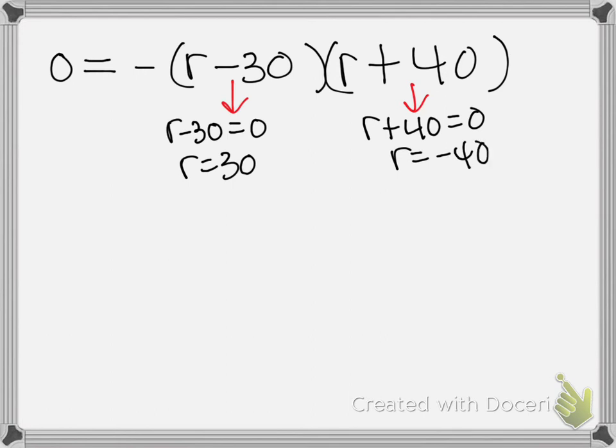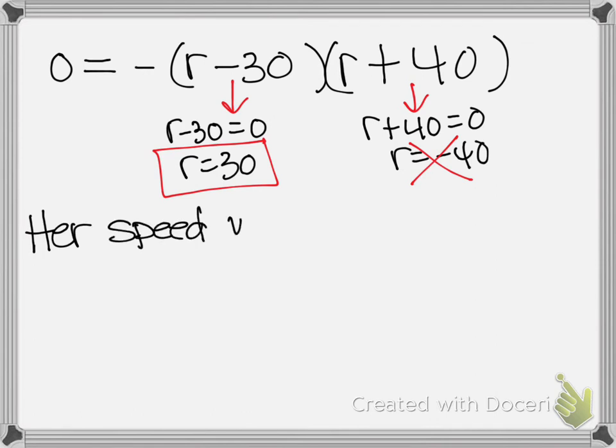So we get R minus 30 equals zero. We also get R plus 40 equals zero. So we get R equals positive 30 or R equals negative 40. Now remember, R stood for her actual rate or her actual speed. So we know that her speed cannot be a negative value. So we're going to throw out the value R equals negative 40 and we're going to keep the value R equals 30. So let's write down what that means.